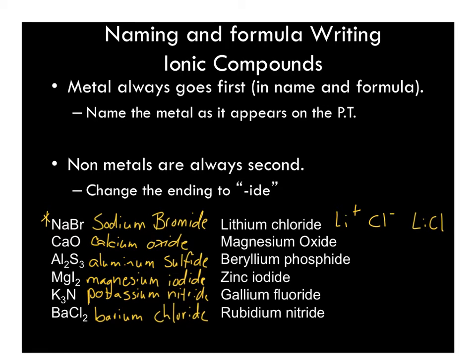For magnesium oxide, magnesium is going to be a plus 2 because it's in the second column of the periodic table, and oxygen is going to be a minus 2. This means two electrons from magnesium are transferred to oxygen, and oxygen only needs two electrons. These two balance each other out, so the formula is MgO.